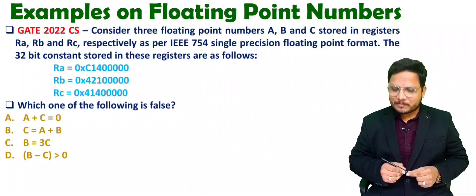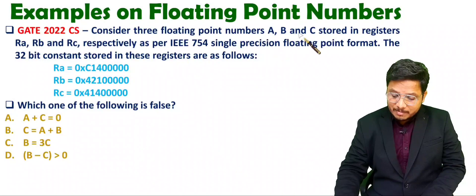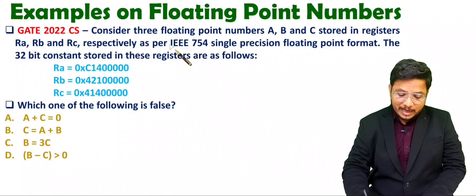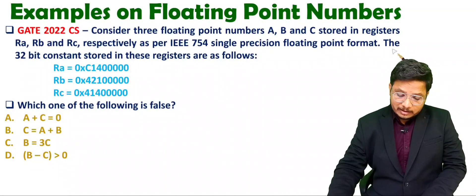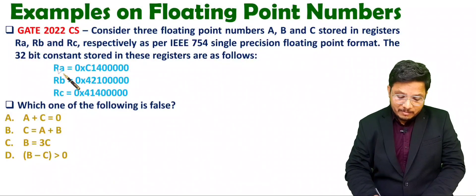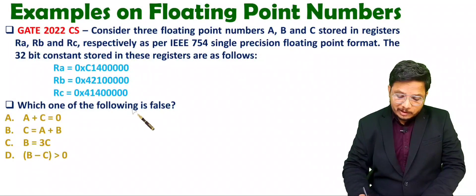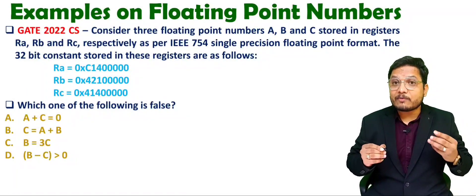Let us have the first question. Consider three floating point numbers A, B and C stored in registers RA, RB and RC respectively as per IEEE 754 single precision floating point format. The 32-bit constants stored in these registers are given. We need to identify the value of A, B and C to determine which one of the following relations is false.